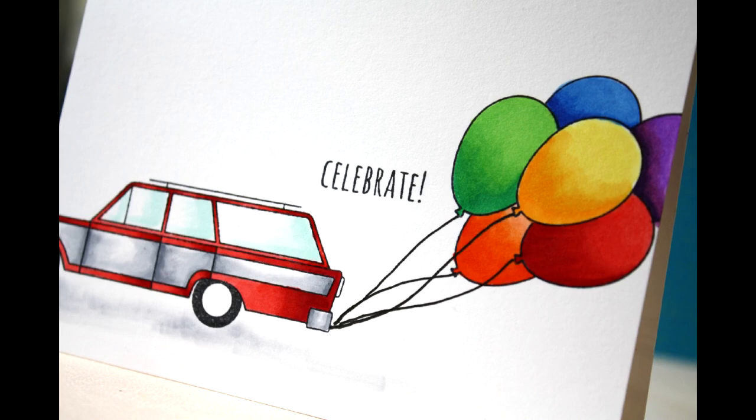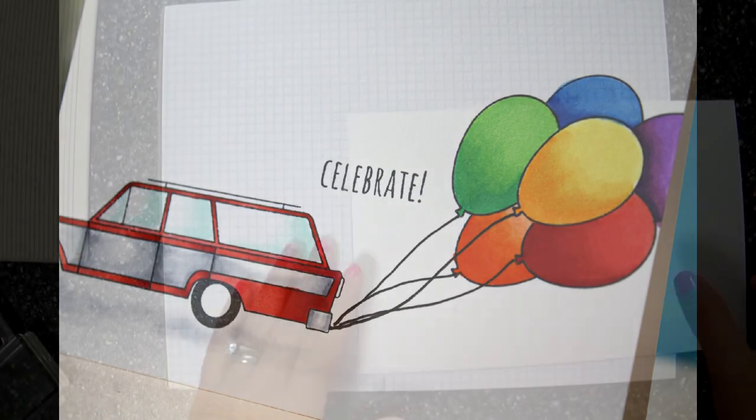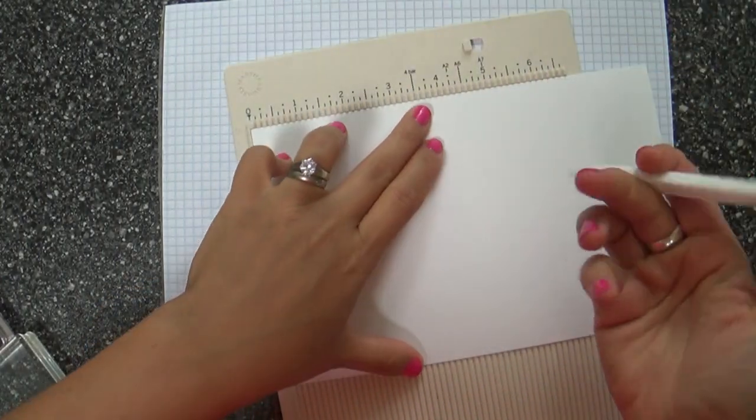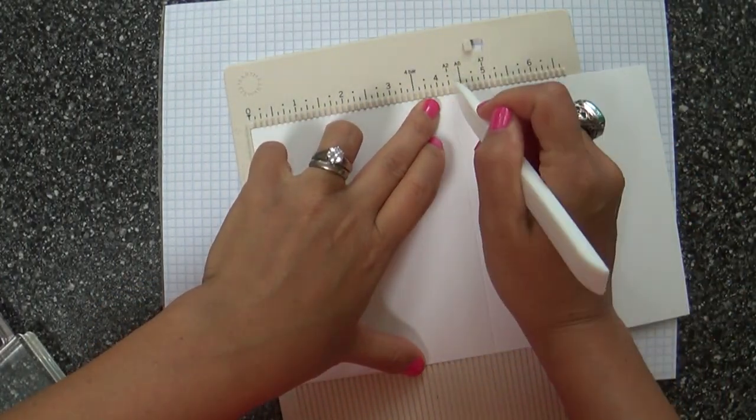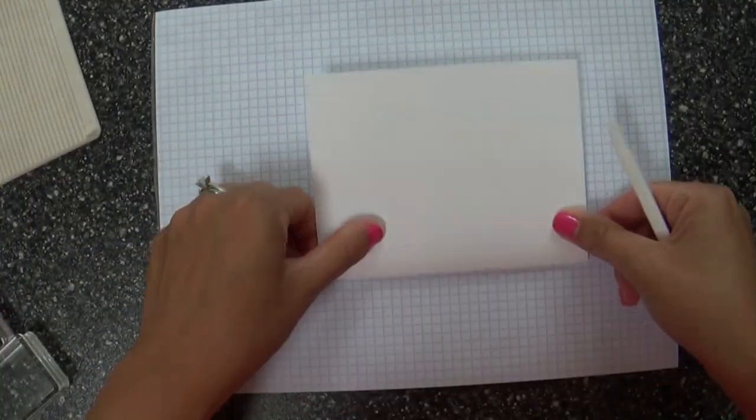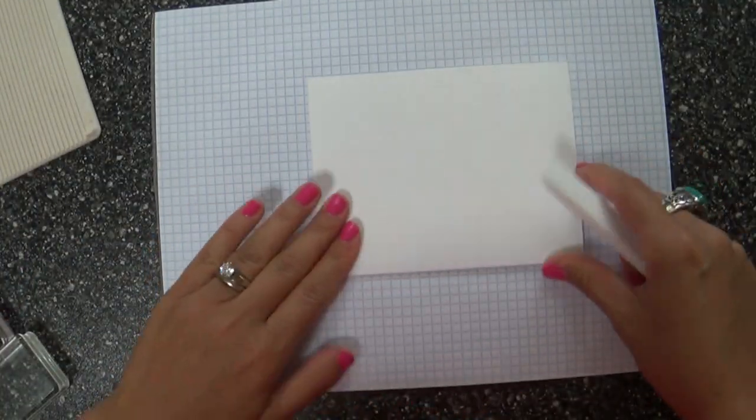Today I'm using some of the brand new stamps that came out in the This Is The Life release. Awesome, awesome release. So many fun stamp sets and dies and stencils, but I wanted to use, I couldn't wait to try to use that station wagon. Did you guys see that station wagon image?